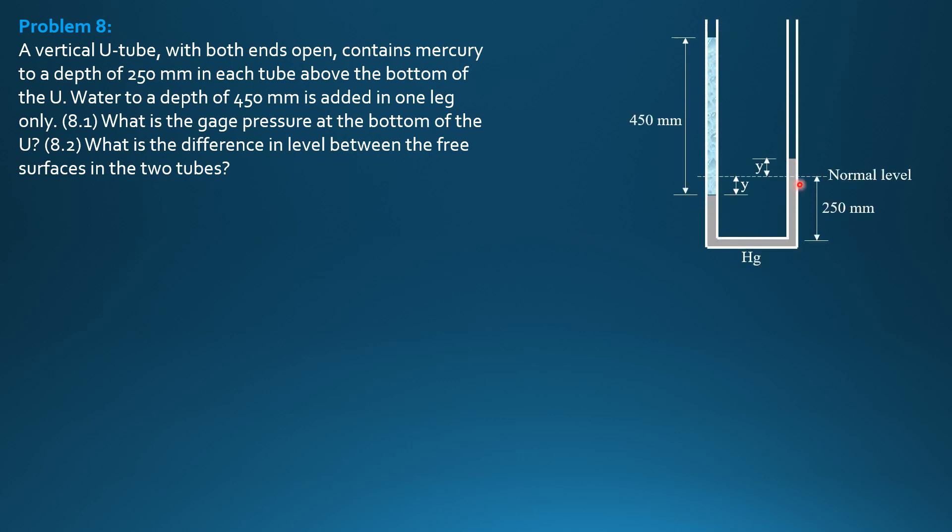So to help analyze the situation, let's know the figure. This is the normal level when there was only mercury in the U-tube. So they lie at the same level and the depth is 250 mm.